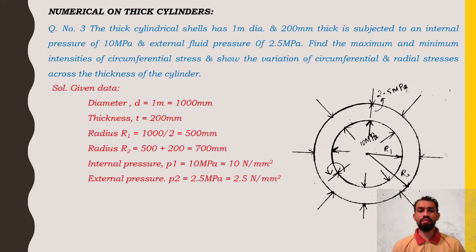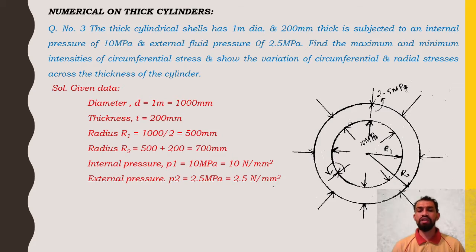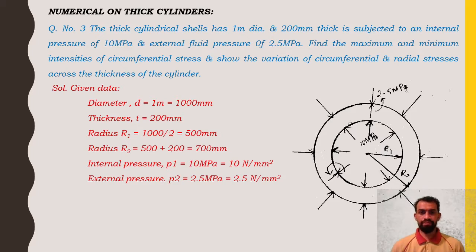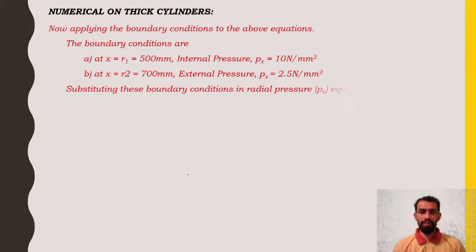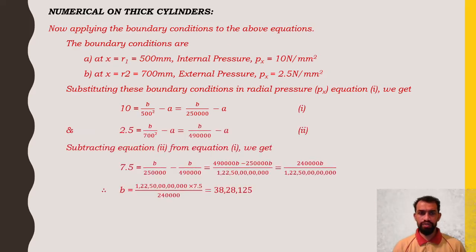Solution: the internal diameter is 1000 mm, thickness t = 200 mm. Internal radius r1 = 1000/2 = 500 mm. External radius r2 = 500 + 200 = 700 mm. Internal pressure p1 = 10 MPa (10 N/mm²) and external pressure p2 = 2.5 N/mm².